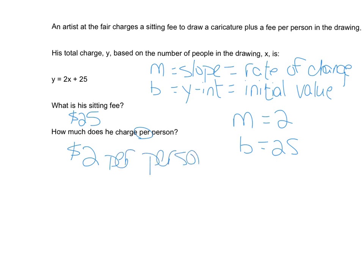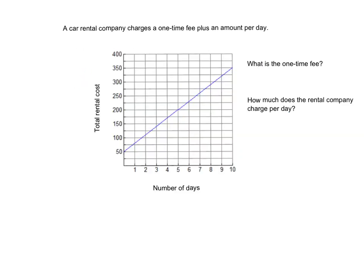The rate of change is always going to be the coefficient of x, and the initial value is always going to be the constant — that number all by itself. Next is a graph.